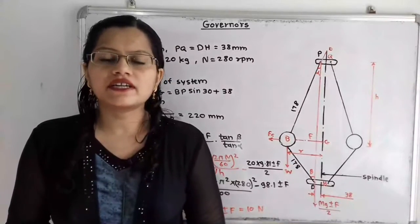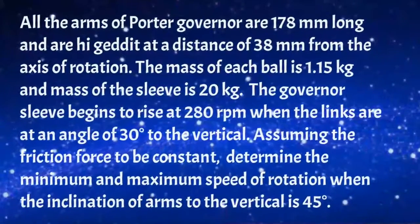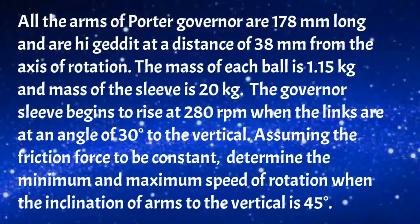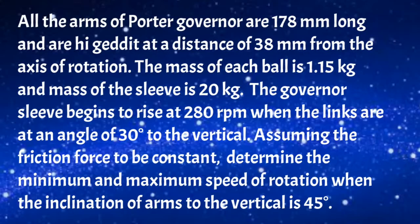Now first, I will read the given problem. All the arms of the Porter Governor are 178 mm long and are hinged at a distance of 38 mm from the axis of rotation. The mass of each ball is 1.15 kg and the mass of the sleeve is 20 kg. The governor's sleeve begins to rise at 280 RPM when the links are at an angle of 30 degrees to the vertical. Assuming the friction force to be constant, determine the minimum and maximum speed of rotation when the inclination of arms to the vertical is 45 degrees.